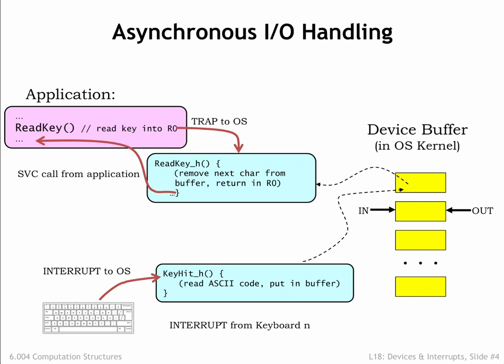There are a few tricky bits we need to figure out. The read-key supervisor call is what we call a blocking I/O request. In other words, the program assumes that when the SVC returns, the next character is in R0. If there isn't yet a character to be returned, execution should be blocked — i.e., suspended until such time that a character is available. Many OSs also provide for non-blocking I/O requests, which always return immediately with both a status flag and a result. The program can check the status flag to see if there was a character and do the right thing if there wasn't — for example, reissue the request at a later time.